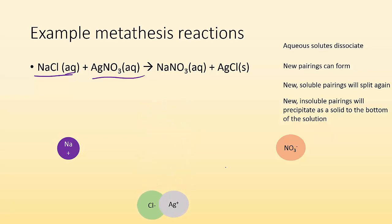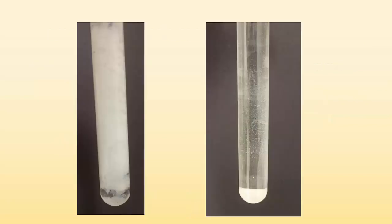Whereas the new insoluble pairings will precipitate as a solid to the bottom of the solution. Because they're stuck together and insoluble, they're going to become a solid. When you first do the reaction, everything's kind of suspended, but it's really just a bunch of solid. Then you give it some time and it all settles — there is your precipitate, the silver chloride.